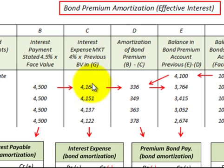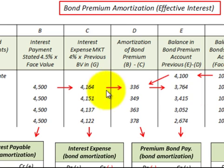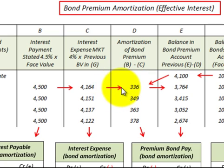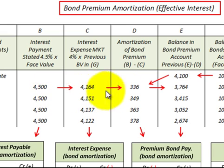For Interest Expense on the income statement, we use the market rate of 8%, divided by 2 for semiannual periods gives 4%, times the carrying value of the bond. For the first period, that is $4,164. The amortization of the bond premium is the difference between the stated-rate interest payment and the interest expense recognized at the market rate: $4,500 minus $4,164 equals $336. We subtract that amortization amount from the bond premium valuation account each period.